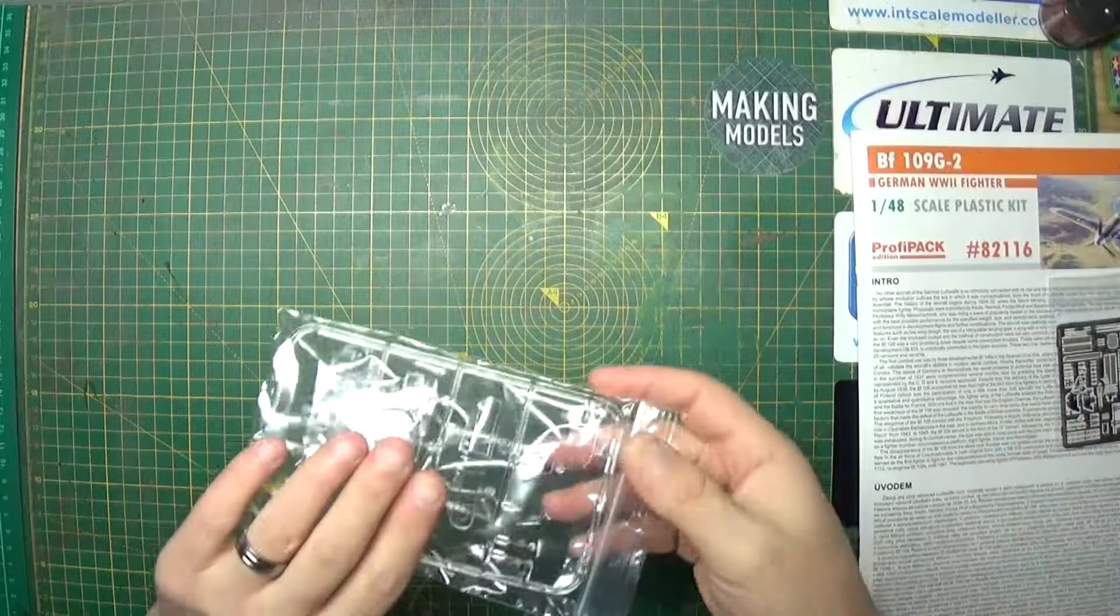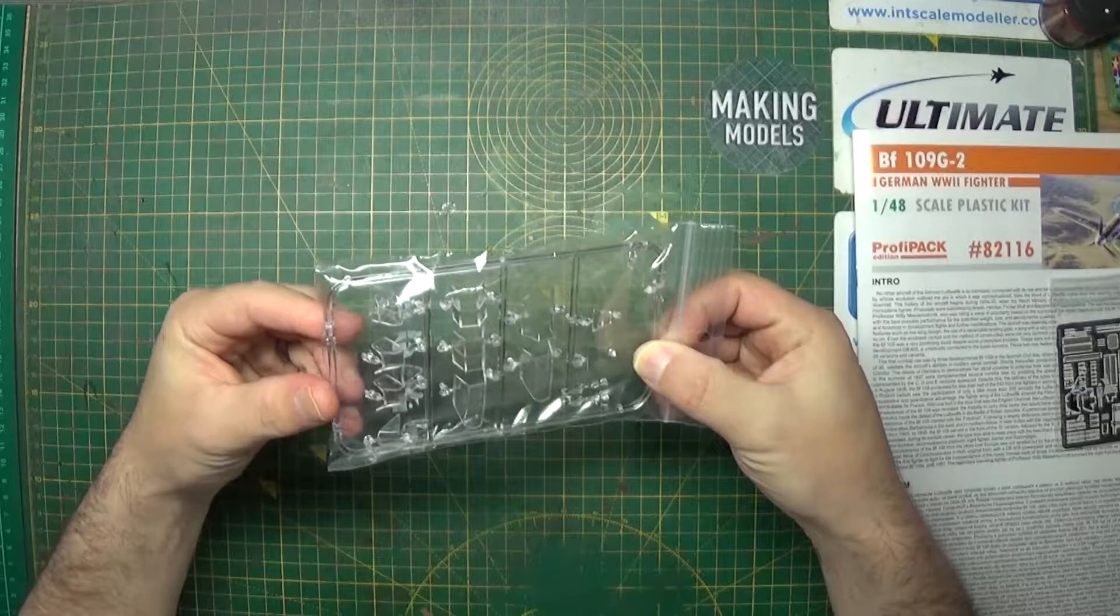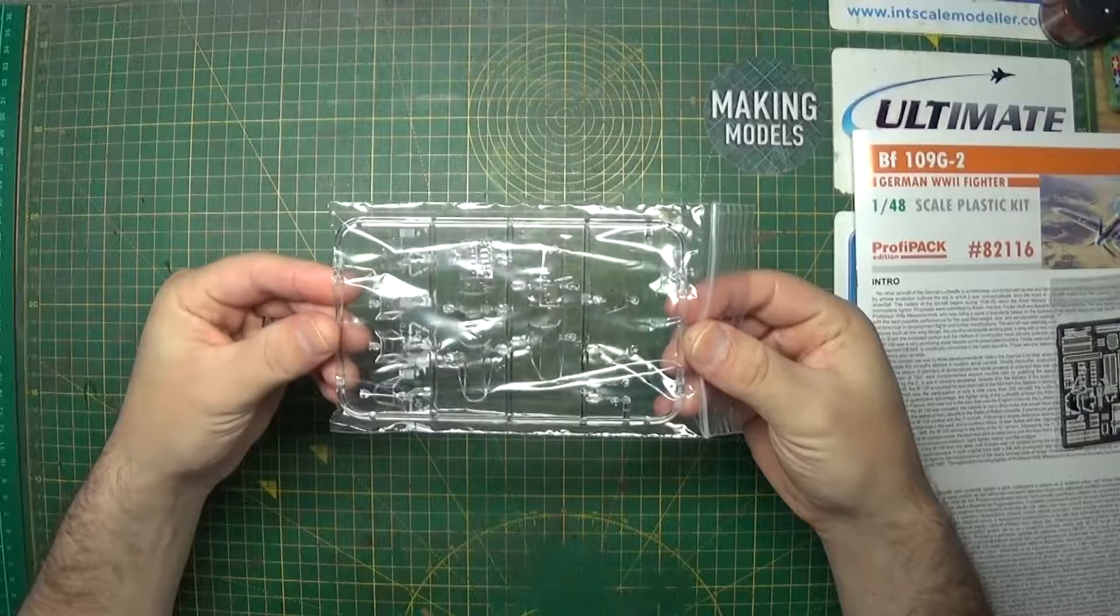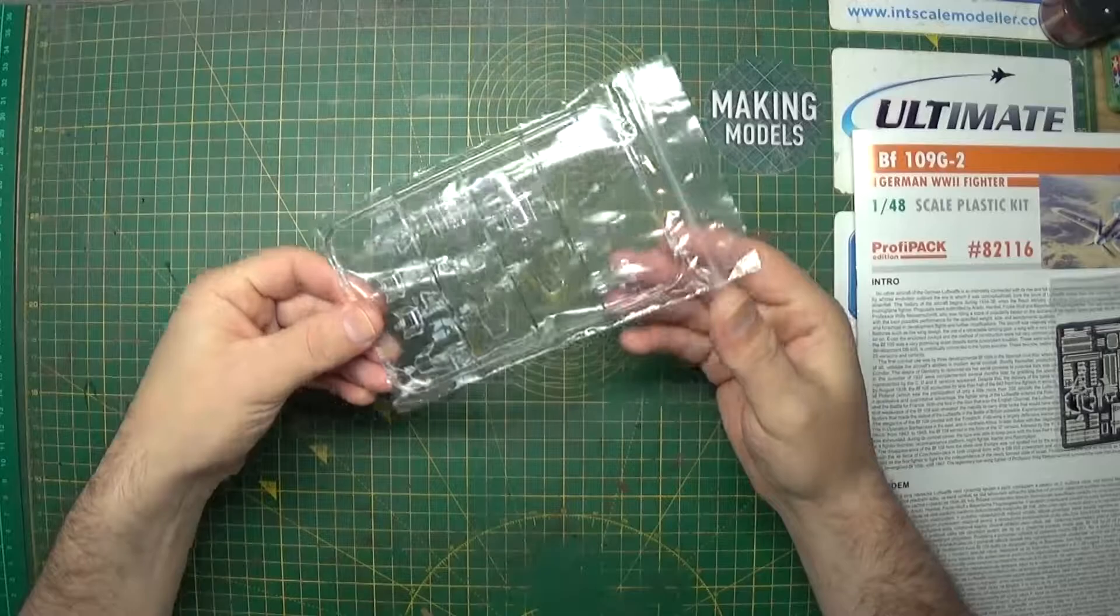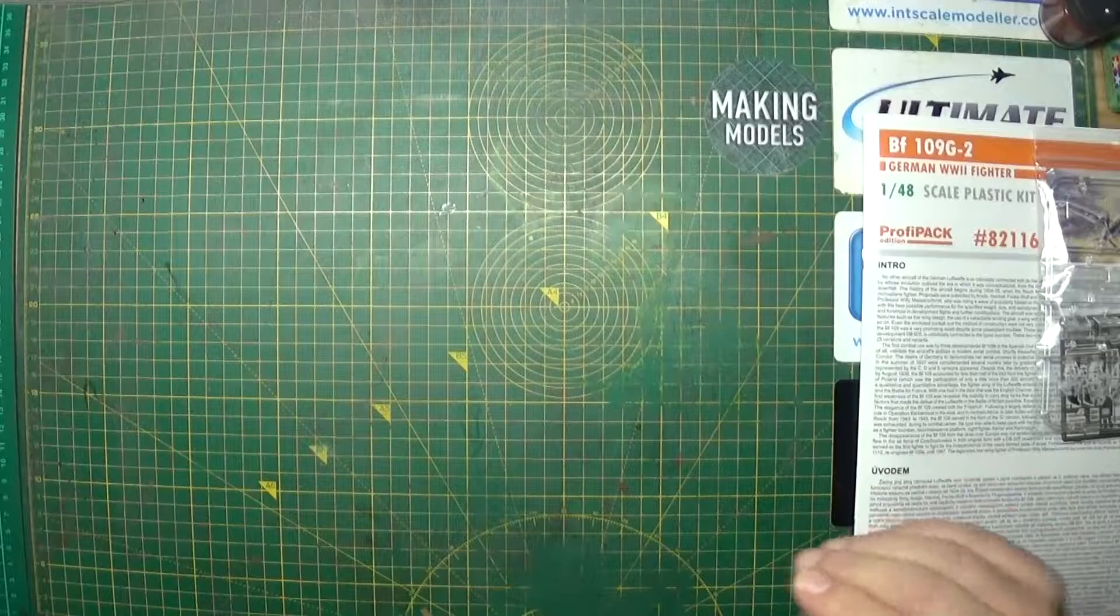So that's the instructions and the other bits and pieces. We then move on to clear parts. And these don't look too bad. I'm not an expert, so I wouldn't really know what it is that I am looking for. They look clear. There's a slight little effect when you look through them at the cutting mat. For the most part, they look okay.